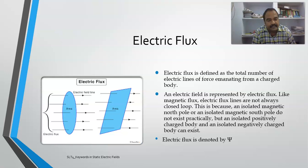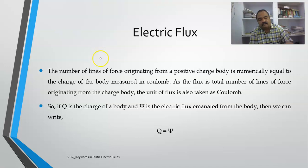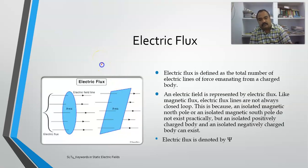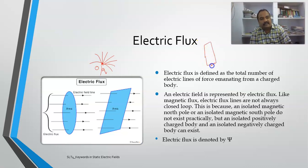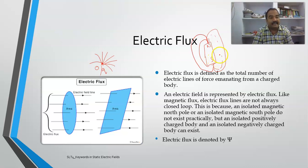Now let us move on to the next term: electric flux. Let us suppose there is a charge Q located at some point O. This charge will emanate lines of force. You might have seen simple experiments on magnetic fields — with a North Pole and South Pole, if you draw iron filings around it, they align in a pattern. These are called magnetic lines of force and are named magnetic flux.